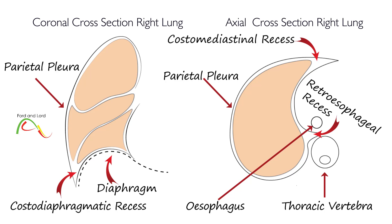Pleural recesses play an important role during deep inhalation. For lungs to increase in volume during deep inhalation, pleural recesses act as reserved spaces. Some of these recesses include the costodiaphragmatic recess, also called costophrenic recess, located between the costal pleura and the diaphragmatic pleura, best understood using a coronal cross-section. The costomediastinal recess is located between the costal pleura and the mediastinal pleura behind the sternum, and the lingula of the left lung can expand into this space during exercise.